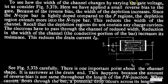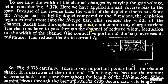To see how the width of the channel changes by varying the gate voltage, let's consider figure 5.37B. Here, we have applied a small reverse bias to the gate using VGG. Because of this reverse bias, the width of the depletion region increases. Since the N-type bar is lightly doped compared to the P regions, the depletion region extends more into the N-type bar. This reduces the width of the channel. Recall that the depletion regions do not contain any charge carriers. The electrons have to pass through the channel of reduced width. Reduction in the width of the channel increases its resistance, which reduces the drain current ID.